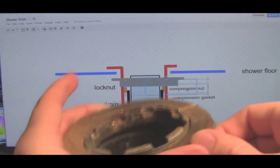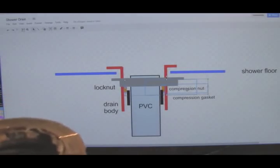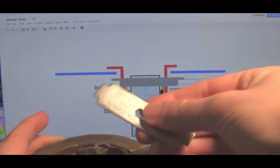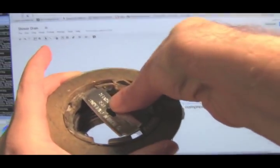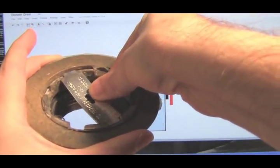To tighten this thing you can either use channel locks or the new drain came with this little handy piece of metal that fits in these notches that lets you use a regular screwdriver to tighten it.